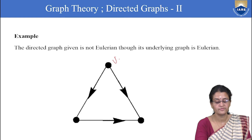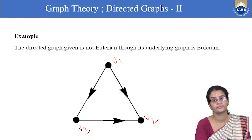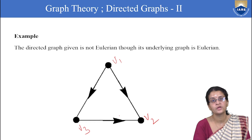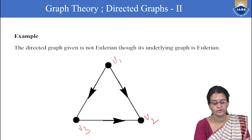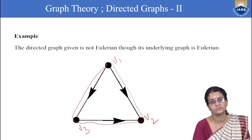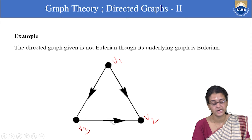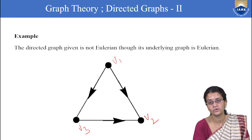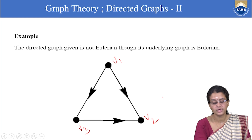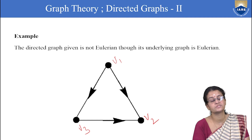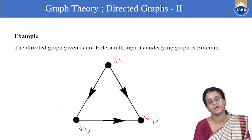Consider another graph with vertices V1, V2, V3. The underlying graph is Eulerian. But when it is a directed graph, if we start from V1 to V3, then V3 to V2 is possible but V2 to V1 is not possible. So even though the underlying graph of a directed graph is Eulerian, the directed graph itself might not be Eulerian.